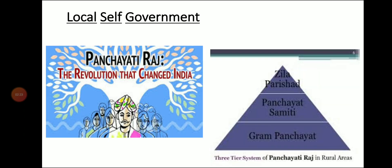The last is local self government. People living in villages, towns, and cities form their own government to look after their local needs. The local self government is the government elected by the people at the local level and it looks into the local problems of that locality. At the rural level, it functions under the Panchayati Raj system, which operates at three levels: Gram Panchayat at the village level, Block Samiti at the block level, and Zila Parishad at the district level.